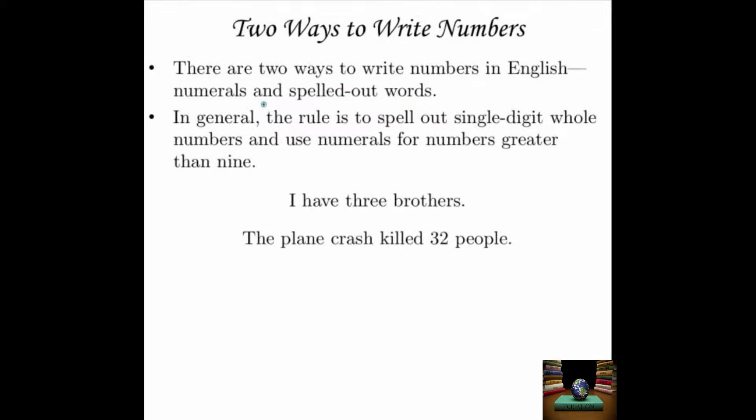There are two ways to write numbers in English: numerals — Arabic numerals, 1, 2, 3, 4, 5 — and spelled-out words. You can get into a little bit of trouble writing numerals in the wrong place or writing spelled-out words in the wrong place, because numerals in the wrong place can seem excessively informal, and spelled-out words in the wrong place can just take you too long.